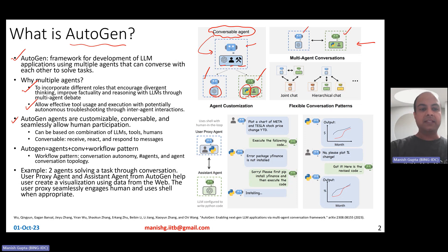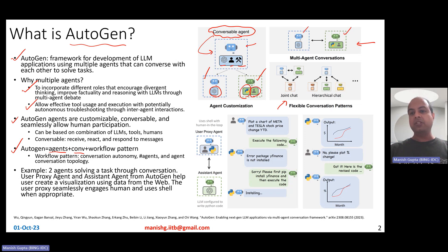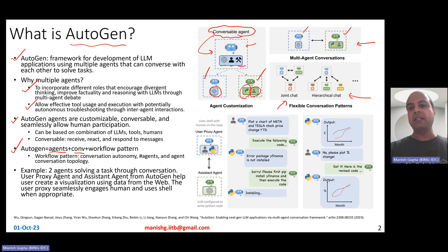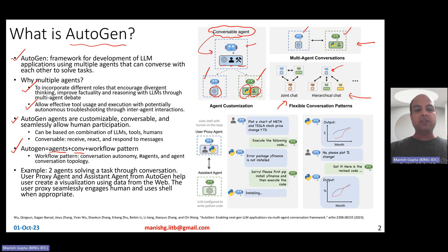The third interesting thing in Autogen is that, besides agents and conversation, it also allows for various workflow patterns. For example, there are two different patterns: a joint chat pattern where three agents are jointly talking to each other, and also a hierarchical chat pattern where there is a master and other agents reporting their outputs to the master. These workflow patterns allow for different levels of conversation autonomy, number of agents, and agent conversation topology.